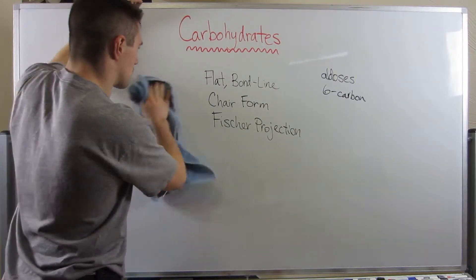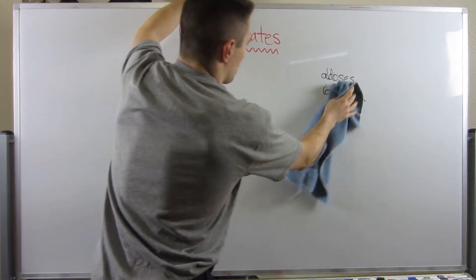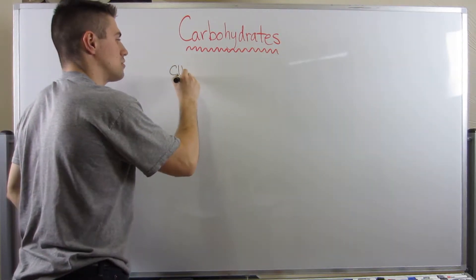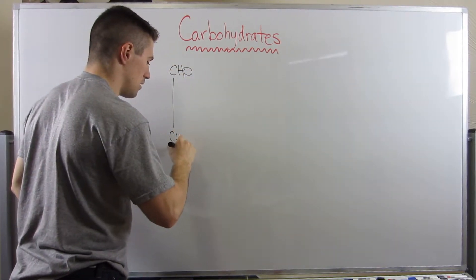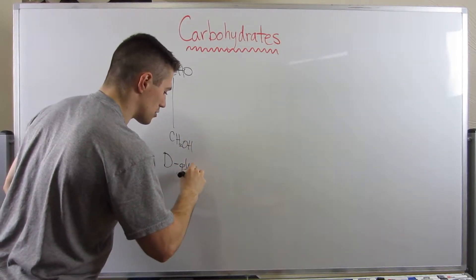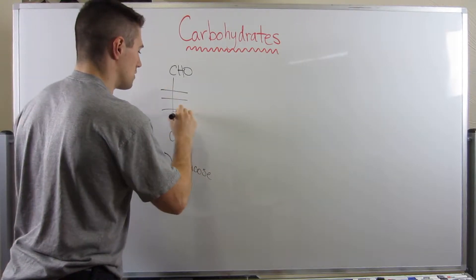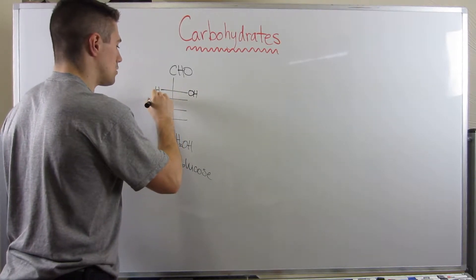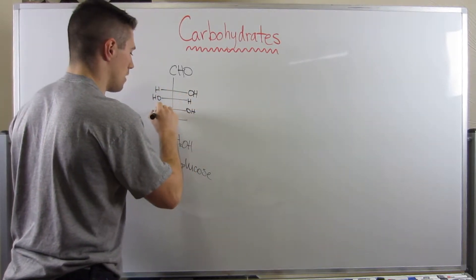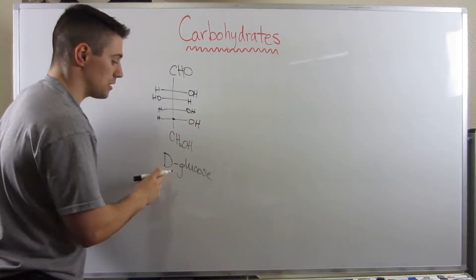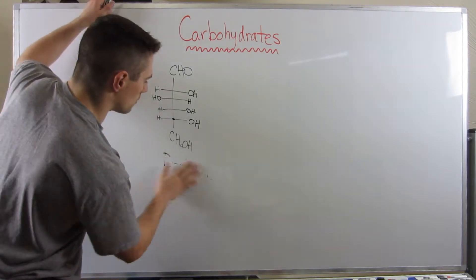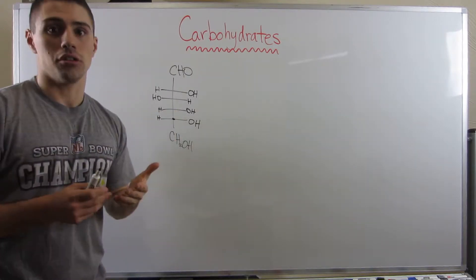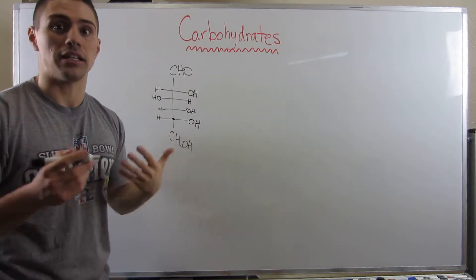So I'm going to draw for you first the Fisher projection of D-glucose, which I drew a lot in the first video. So D-glucose — the Fisher projection looks like this. OH, OH, OH, OH, and OH. Last stereo center, OH is on the right because it is D-glucose.